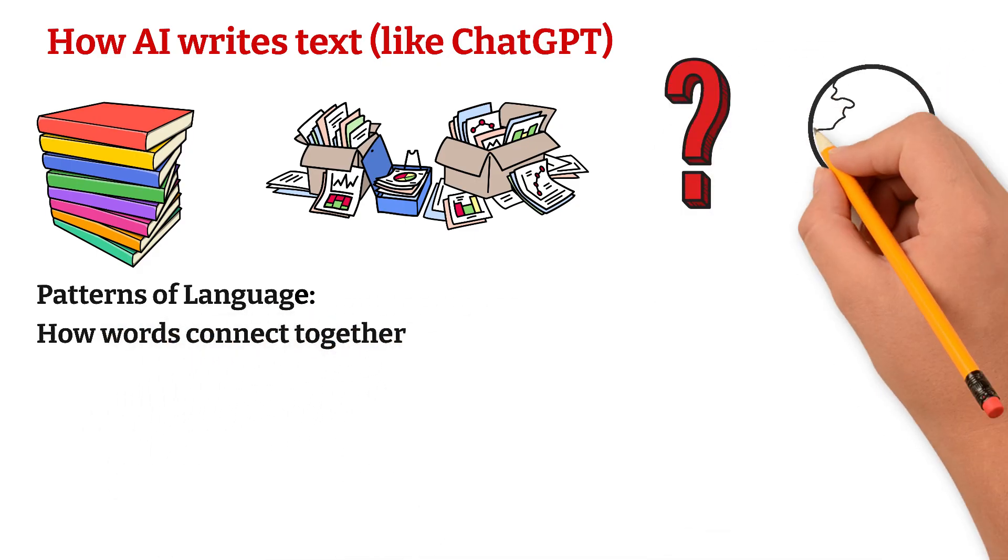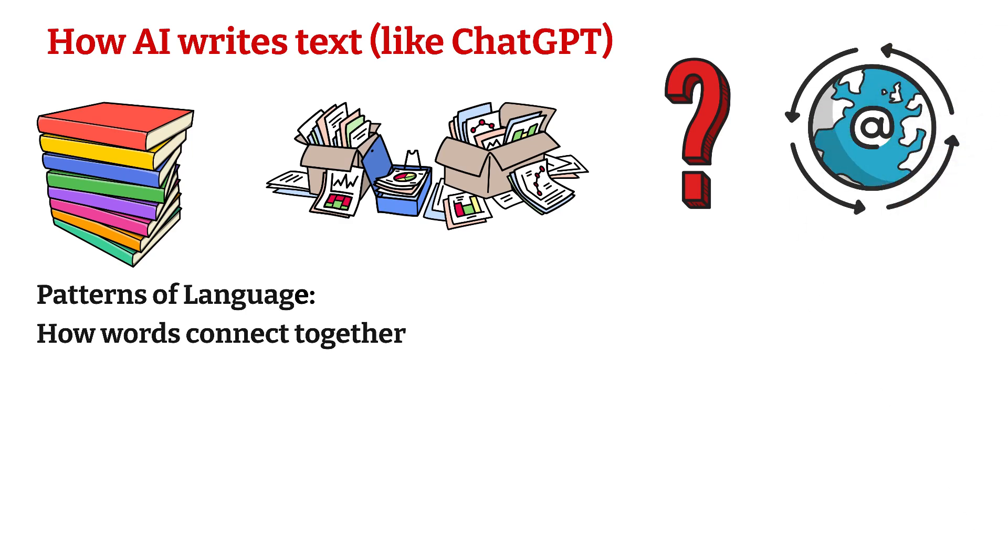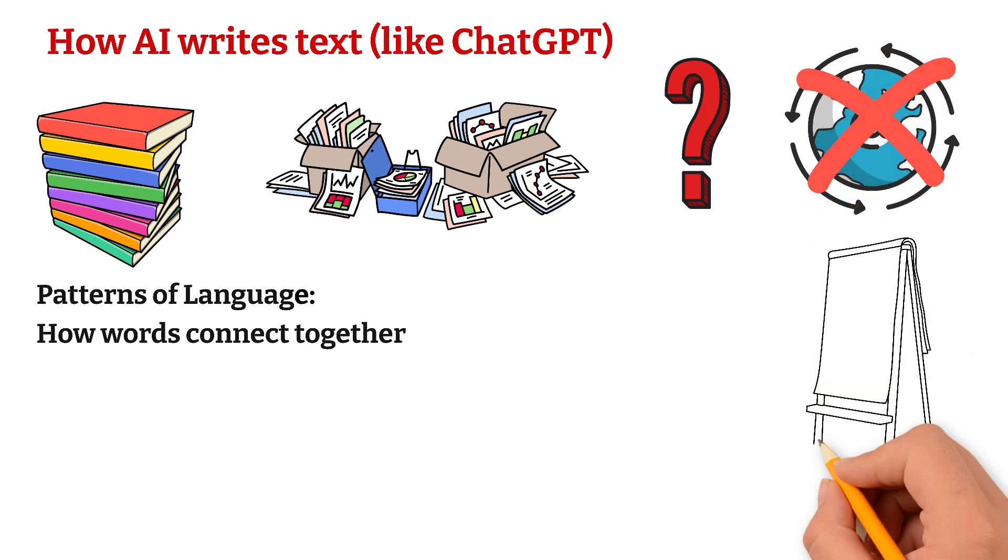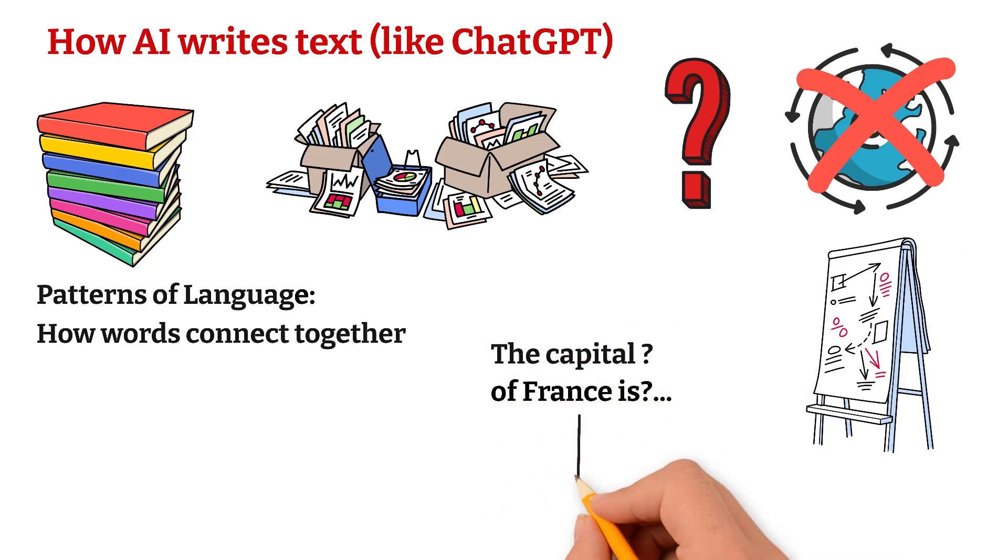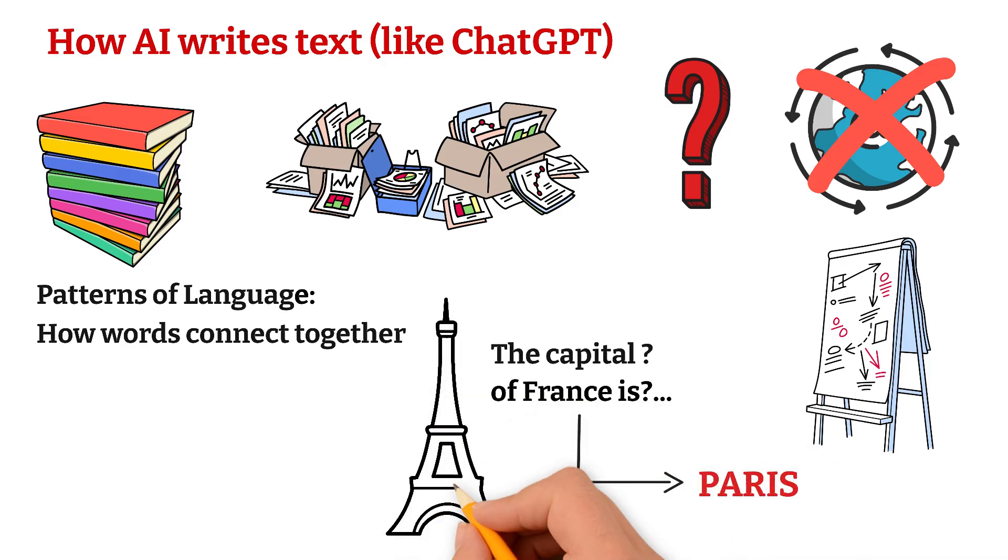So when you ask, what's the capital of France? It doesn't search the web. It simply predicts the most likely response based on what it learned. It thinks, the capital of France is, and the most likely next word is, Paris. Because it has already seen that phrase millions of times and knows the pattern.